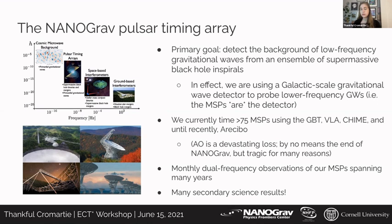To observe those pulsars, we use the Green Bank Telescope, the VLA, the Canadian Hydrogen Intensity Mapping Experiment, and until recently, Arecibo. The loss of Arecibo is really heartbreaking and devastating for a lot of reasons, but it doesn't mean the end of NANOGrav. We're trying to restructure our observing program to compensate, but it has impacted us significantly and it's been hard.